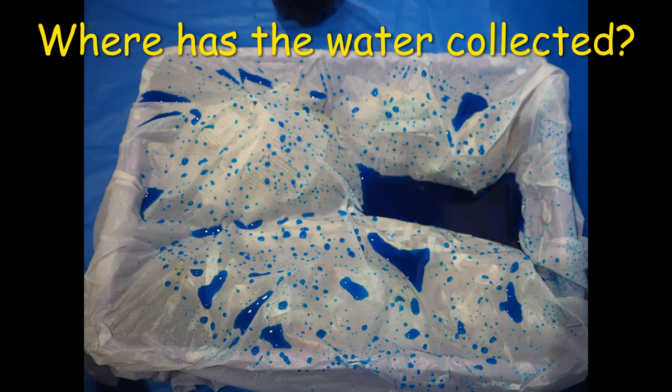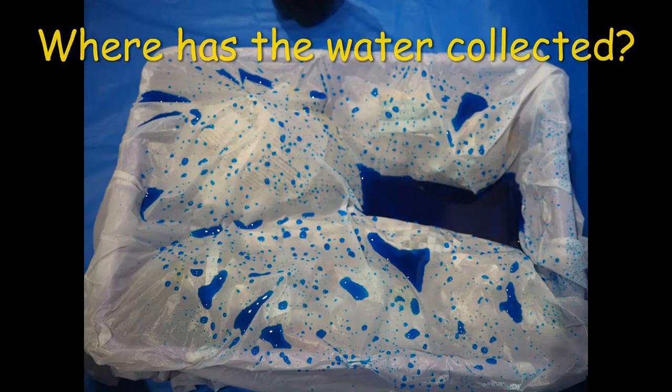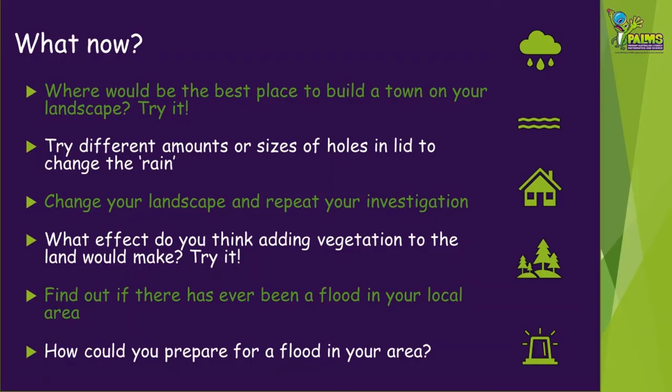Once you have finished simulating the rainfall, take a look at your landscape model and notice where the water has collected. What sort of areas do you think these represent in a real landscape?